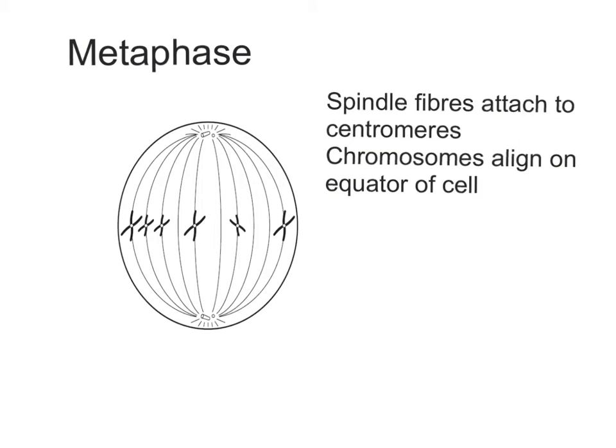The spindle fibres are now attached to the centromeres of each chromosome and this pulls the chromosomes to the equator of the cell, so they're now lined up in the middle of the cell.